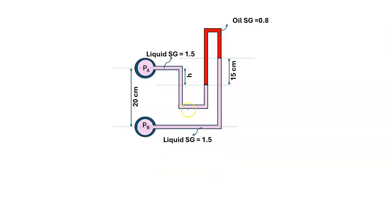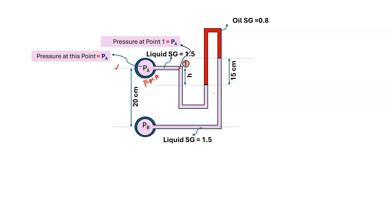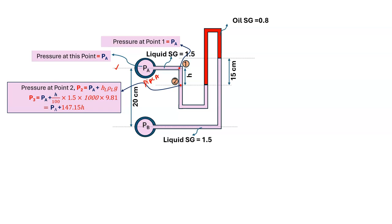The pressure at the center of pipe A is PA. Drawing a horizontal line, the pressure remains the same along that line — so at point 1 pressure is PA. Going downward, pressure increases. So at point 2, pressure is PA plus H·ρL·g, which is PA plus H/100 × 1.5 × 1000 × 9.81, giving PA plus 147.15·H Pascals.